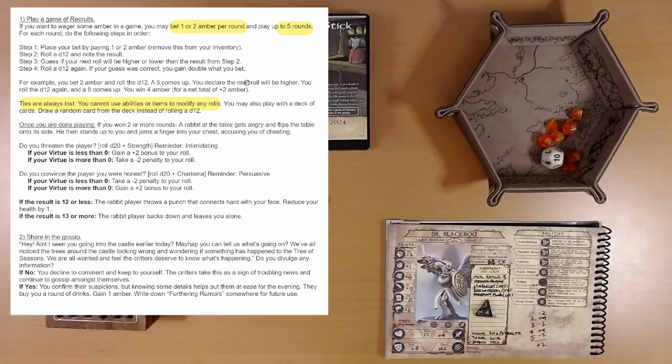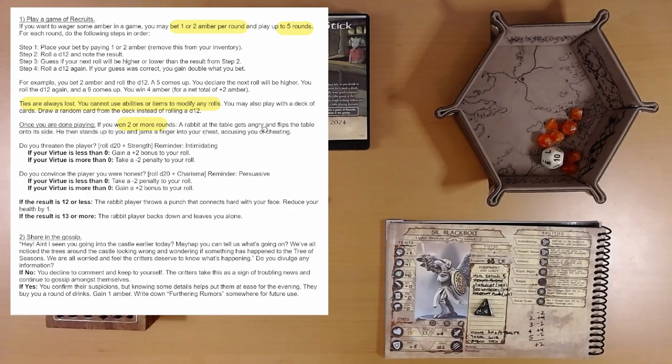And we weren't not allowed to use our boondie. Oh, it didn't say boondie. I guess we could've used it. Well, no. I don't. I think that's it. Okay. Once you're done playing, if you won two or more rounds. Uh-oh. Yes. That's us. A rabbit at the table gets angry and flips the table onto its side. He then stands up to you and jams a finger into your chest, accusing you of cheating. Cheating. We're only walking away with two amber, buddy. Do you threaten the player? Do you convince the player you are honest? Okay.